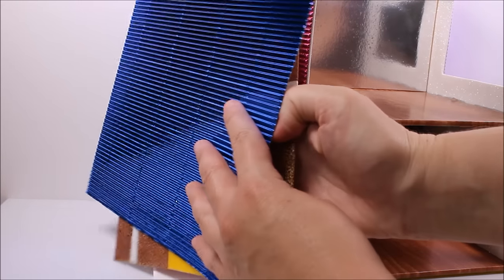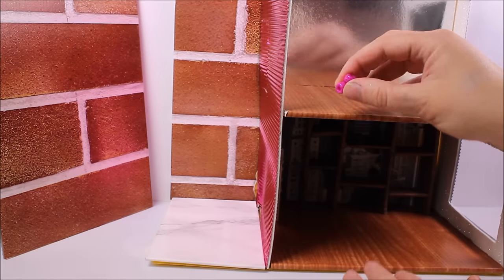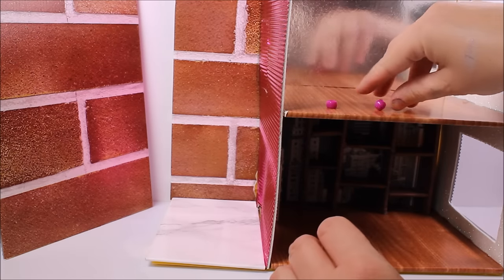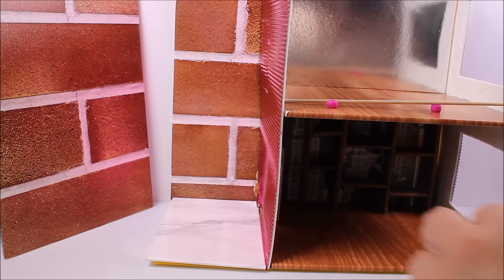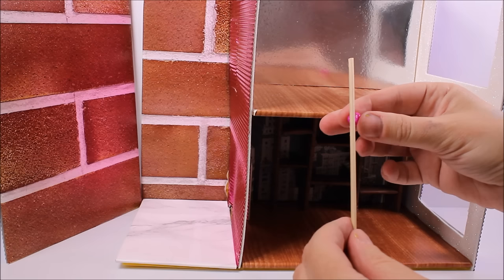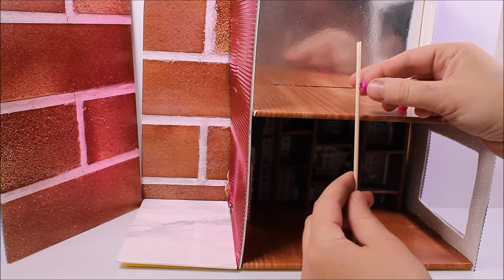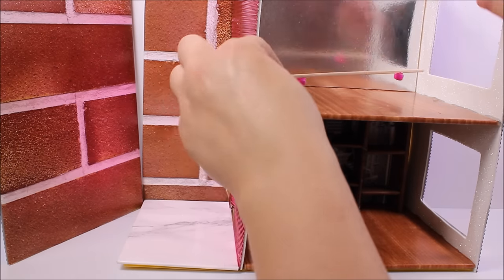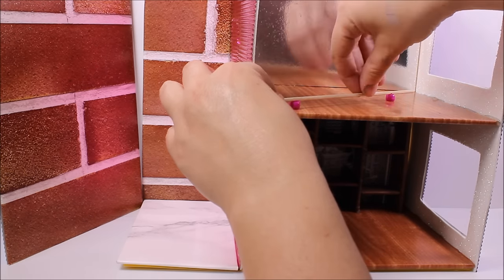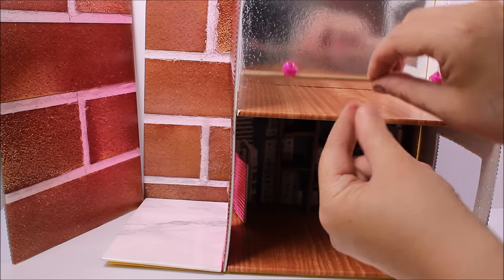So I'm going to glue these two pieces together. Now for the ballroom studio I need two beads and a barbecue skewer. I glue them together, and now I glue these two beads on the wall.